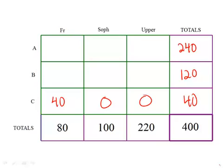Now we're told that half the students from B are upperclassmen. So half of 120 is 60. Half of them are upperclassmen. And the other 60 are split evenly. So 30 and 30.